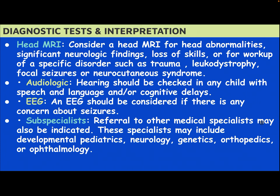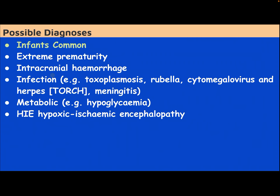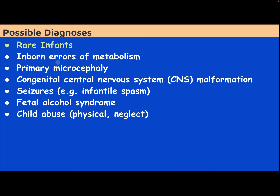Referral to other medical subspecialties may also be indicated. These may include developmental pediatrics, neurology, genetics, orthopedics, or ophthalmology. Common causes in infants: extreme prematurity, intracranial hemorrhage, infection, TORCH infection, meningitis, metabolic causes like hypoglycemia, hypoxic-ischemic encephalopathy. Rare causes in infants: inborn errors of metabolism, primary microcephaly, congenital central nervous system malformation, infantile spasms, fetal alcohol syndrome, child abuse — physical or neglect.